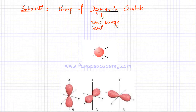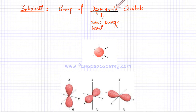In this video lecture, we're going to talk about subshells. There's nothing different about subshells. We discussed and explained what orbitals were. Subshells are just a group of orbitals — a group of degenerate orbitals. The word degenerate is used for orbitals having exactly the same energy level.